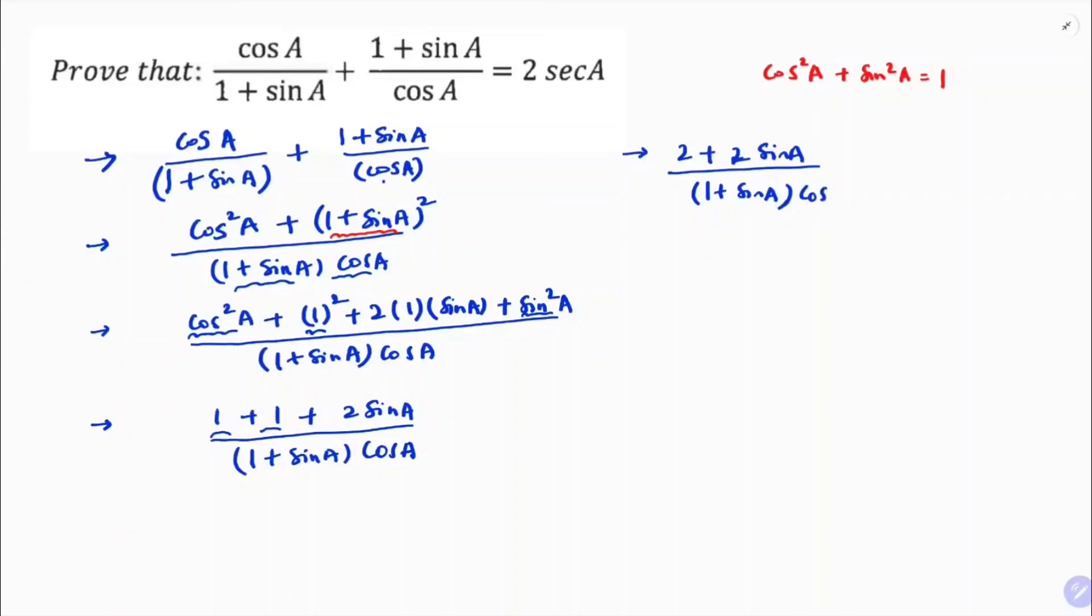So here, if I will take 2 common, 1 plus sin A into cos A. Now, see here, 1 plus sin A, 1 plus sin A will get cancelled, so we are left with 2 by cos A.